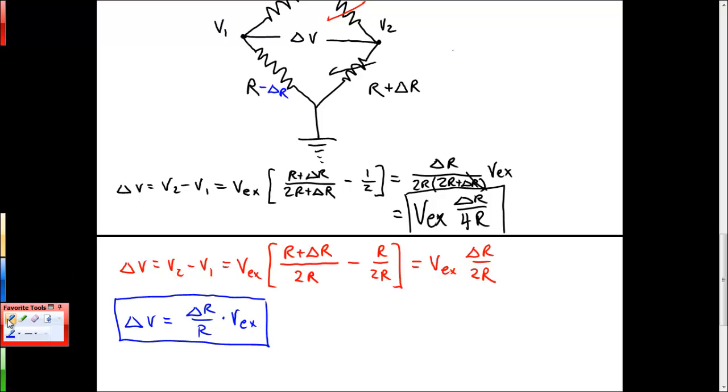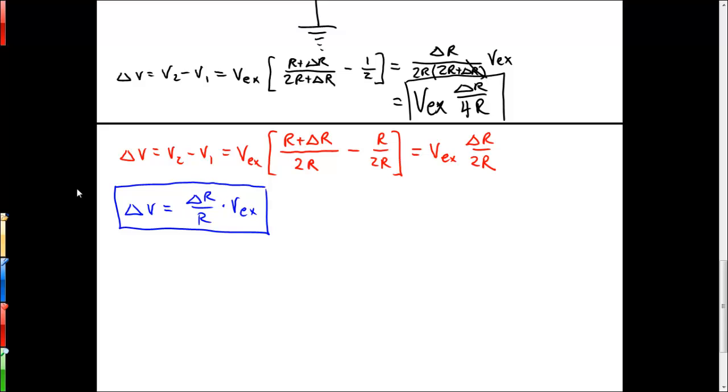So let's go back to the case where we had just the two strain gauges and work through a short example. In this case, we know that delta V is equal to the excitation voltage times the change in resistance over twice the nominal resistance. We can write this as excitation voltage over 2 times delta R over R.